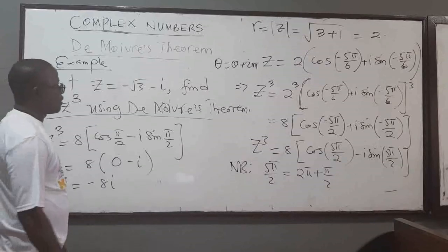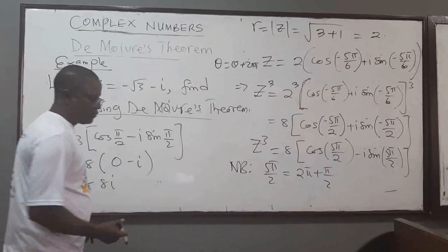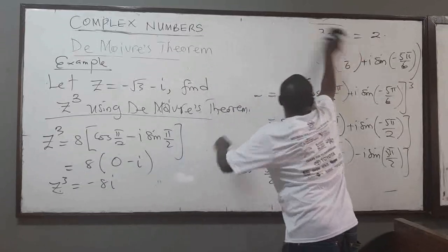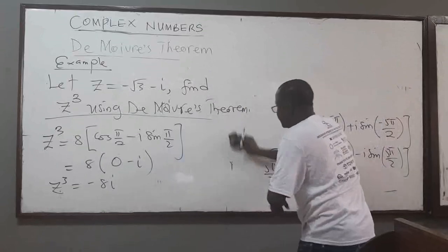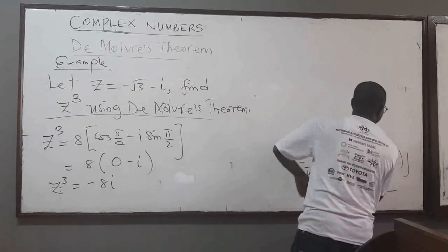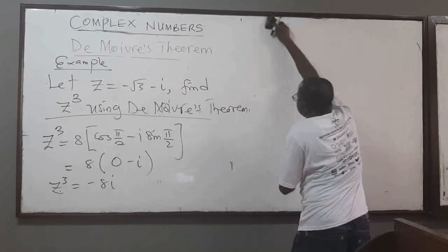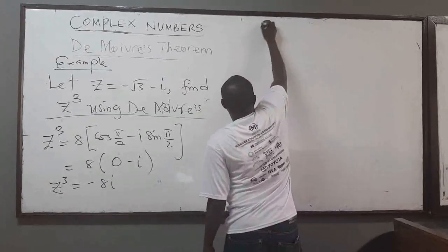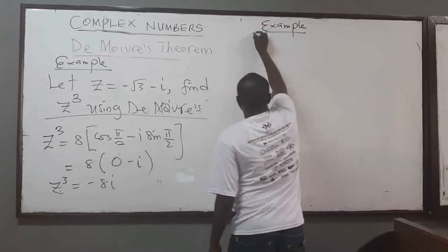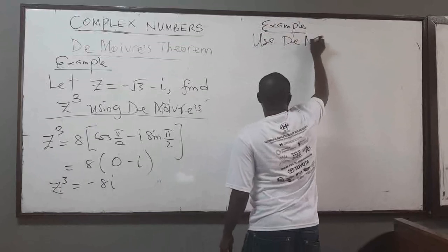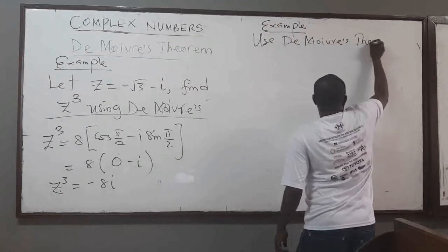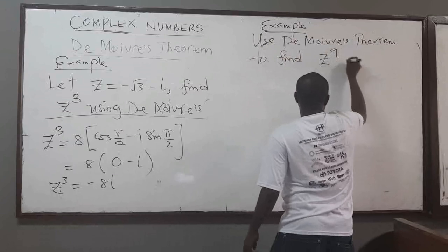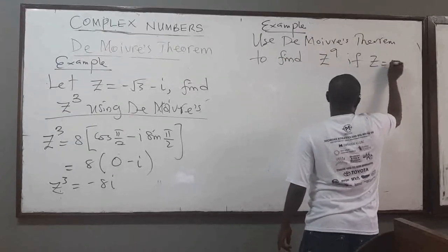So that's how you apply De Moivre's theorem to find the powers of a complex number. Let's do one more example: use De Moivre's theorem to find z to the power 9, if z is equal to 1 plus i.